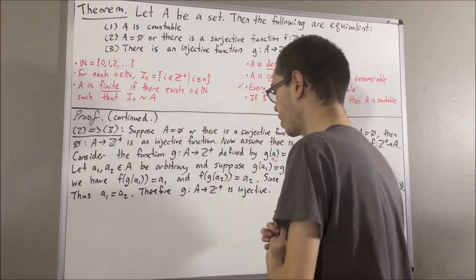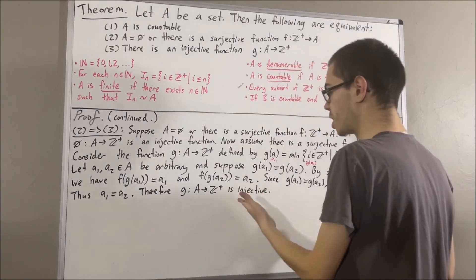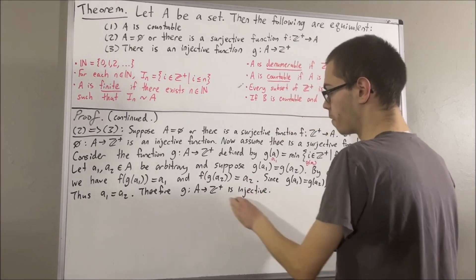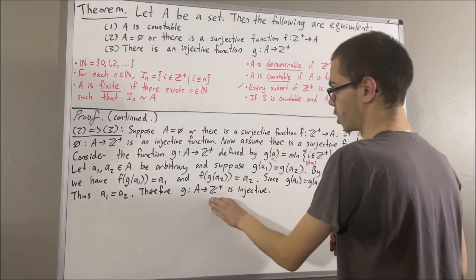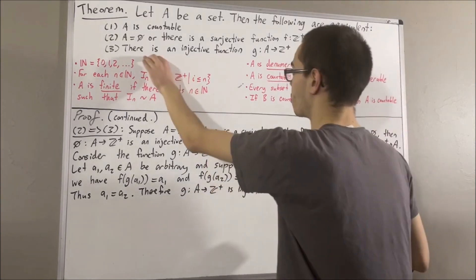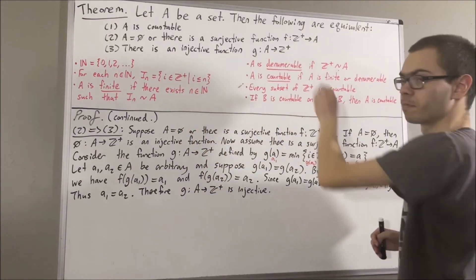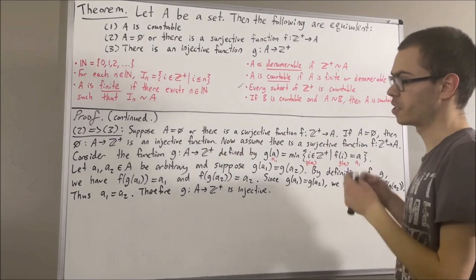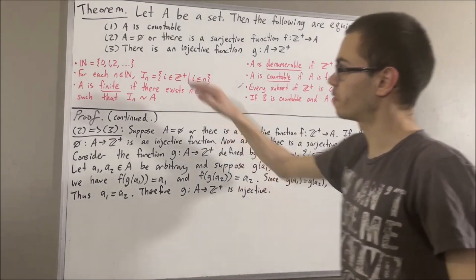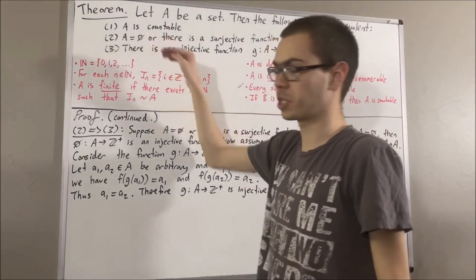So we've shown there exists an injective function from A to the positive integers, meaning 3 is true. And so we've shown if 2 is true, then 3 is true.